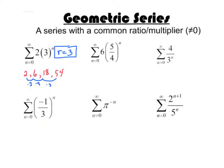This next one, easy to pick out — it's just going to be 5 fourths. It's the thing being raised to the n each time. Over here, it might be useful to think: instead of 4 over 3 to the n, really it's 4 multiplied by 1 over 3 to the n, which is the same as 4 multiplied by 1 third to the n.